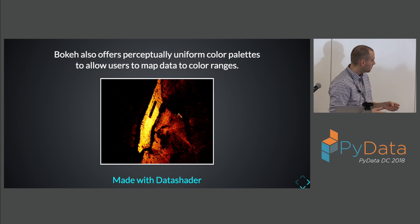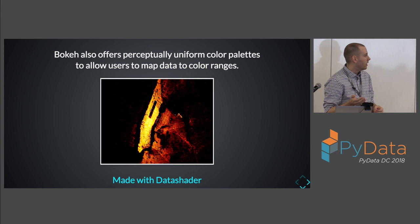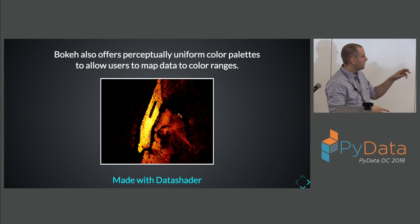Bokeh has nice utilities allowing you to map color palettes onto data ranges. You can say: I have this column with values between zero and a hundred, and I just want Bokeh to apply this 'fire' palette onto it, where the high value is the most intense and the lowest is the least intense — just take care of it.